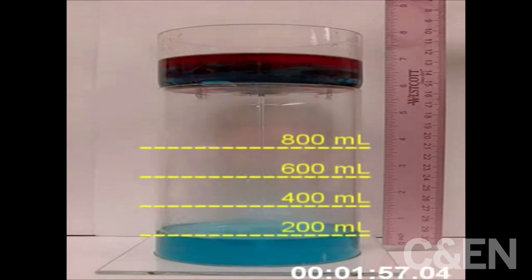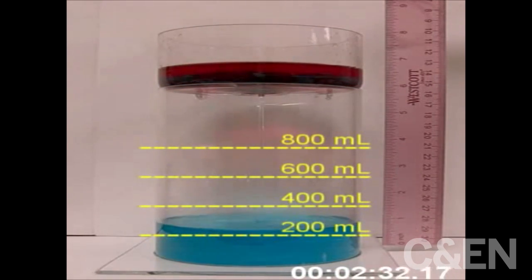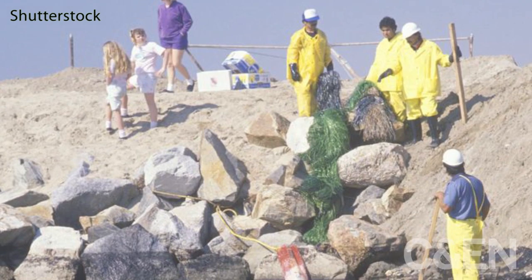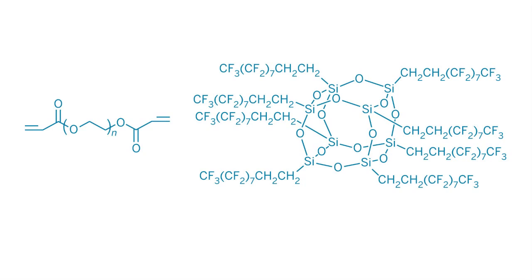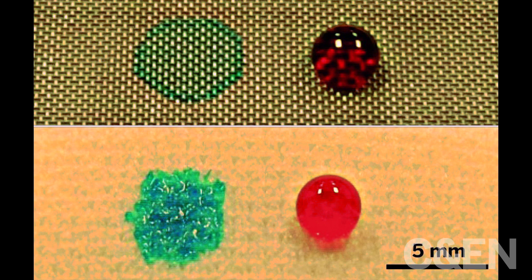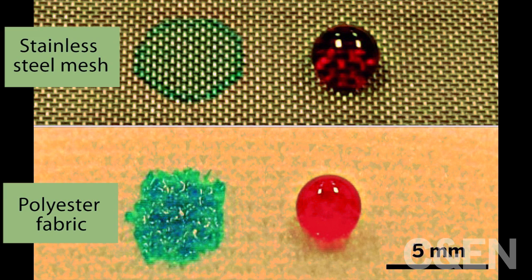They say the membrane might be particularly useful as an energy efficient, low cost means of cleaning up oil spills. To make the membranes, the team combined a water loving polymer with an oil repelling silicon based material. Then they dipped polyester fabric or stainless steel mesh into the mixture and let it dry.